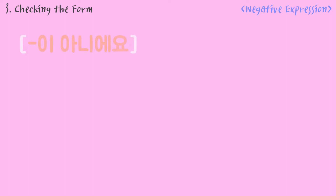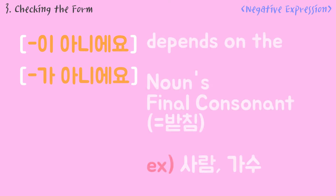Checking the form. Basically, the basic grammar forms are 이 아니에요 and 가 아니에요. They depend on the noun's final consonant. For example: 사람, 미음, 가수, 난.